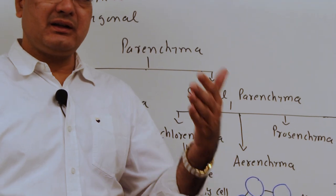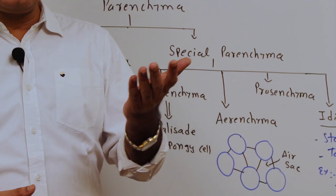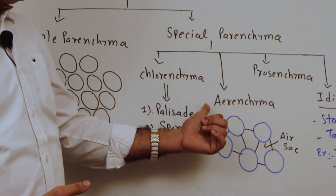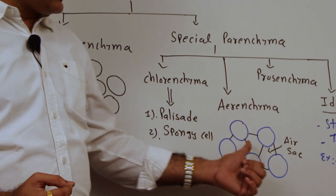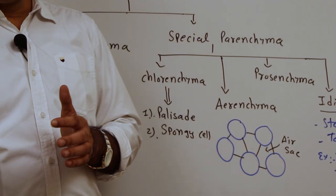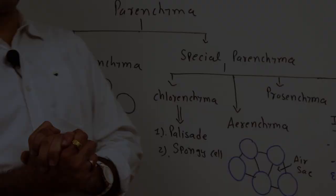Aerenchyma is found in aquatic plants. In aquatic plants, the leaf needs buoyancy to float on the surface of the water. That's why aerenchyma is present, which has air sacs or air bladders in between the cells or in the intercellular space, so the leaf can easily float on the surface.